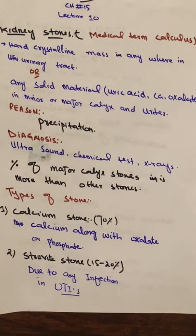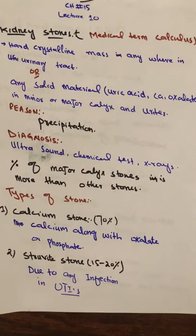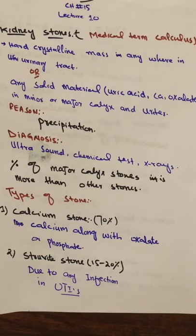These are solid materials, for example uric acid and calcium oxalate, found in the kidney and the minor and major calyces, which we have read in the previous lecture. These can also be deposited in the ureter. The reason is precipitation — a crystalline mass of, for example, uric acid, calcium oxalate, etc. This is the precipitation of kidney stone.